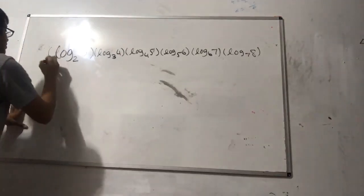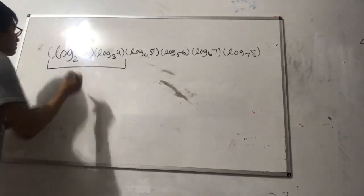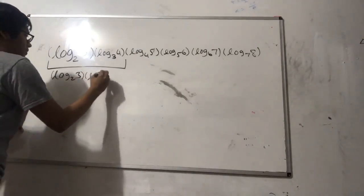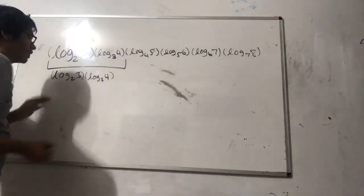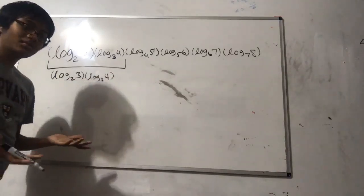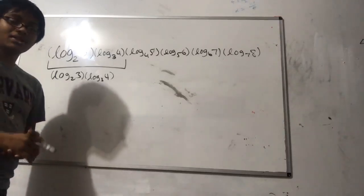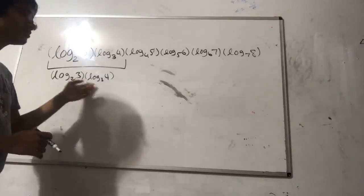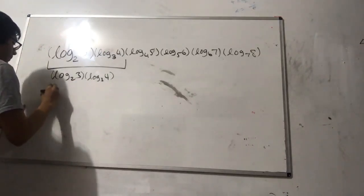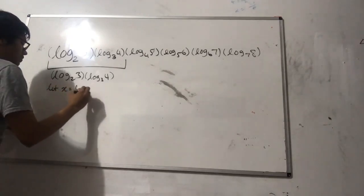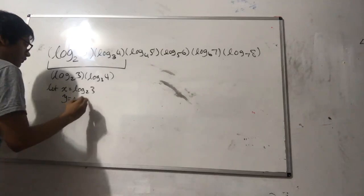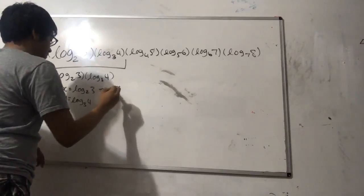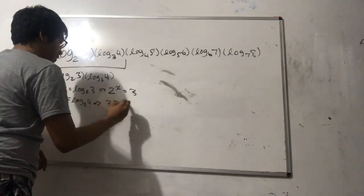To solve this problem, the first thing we have to do is break it down. Let's take a look at log base 2 of 3 times log base 3 of 4. When you want to find the product of two logarithmic expressions with different bases, you can apply the change of base formula, but here I'm going to set each expression to a variable: let x equal log base 2 of 3, and let y equal log base 3 of 4. So we have 2 to the x equals 3, and 3 to the y equals 4.